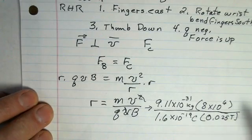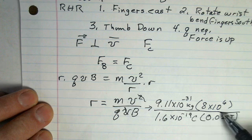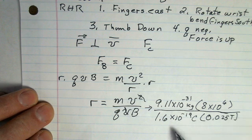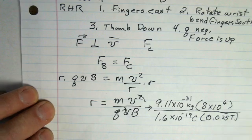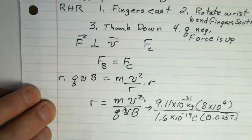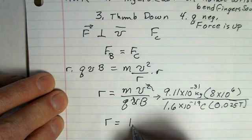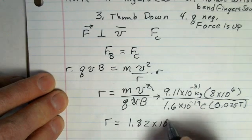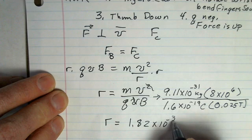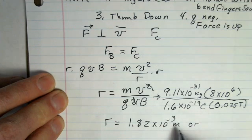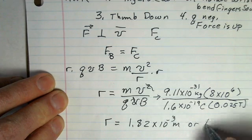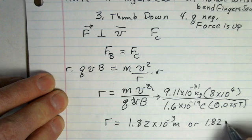Mass of the electron, the speed of that electron, the size of the charge on that electron, and the magnetic field size. I put that into my calculator. I came up with 1.82 times 10 to the minus 3 meters. And 10 to the minus 3 would be one millimeter, so 1.82 millimeters, fairly small circle.